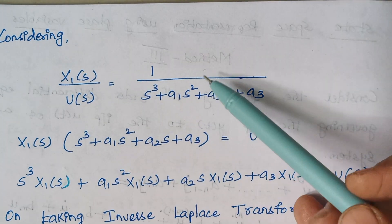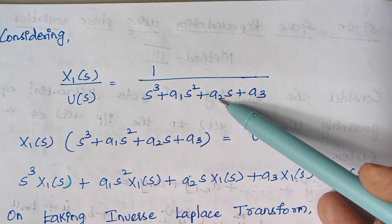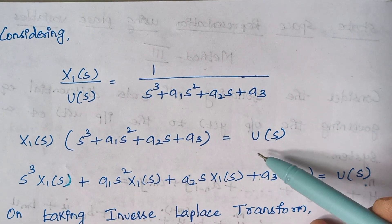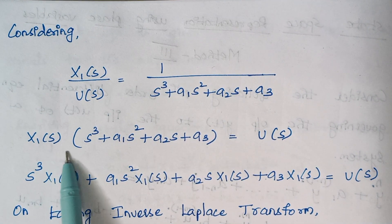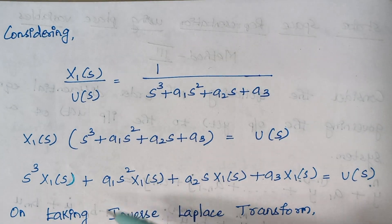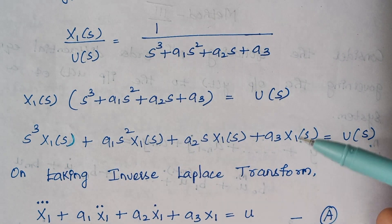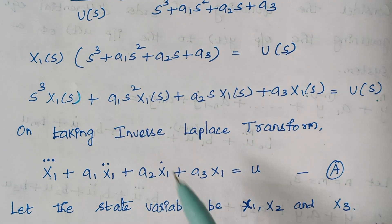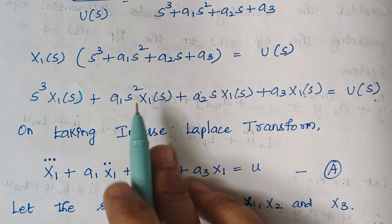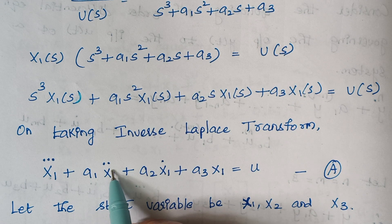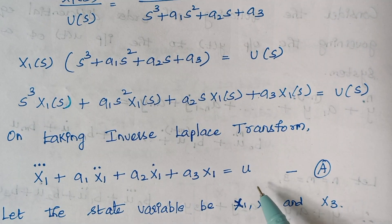Considering the first term X1(s)/U(s), we perform cross multiplication. Multiplying X1(s) into the terms inside the bracket gives us an expression. Taking the inverse Laplace transform: the highest power is 3, so x1 is differentiated thrice; s² gives x1 differentiated twice; s gives x1 differentiated once; and a3·x1 equals u.